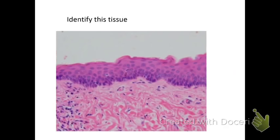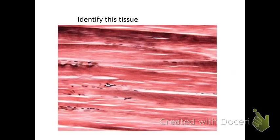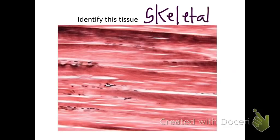When you look at this, you can actually see the striations — you can see all the striations. So this one is skeletal muscle.